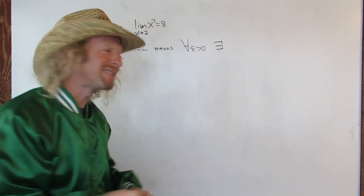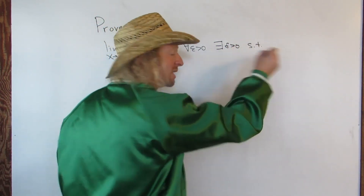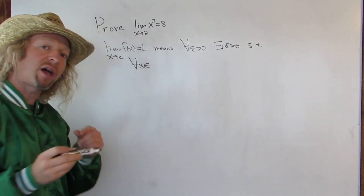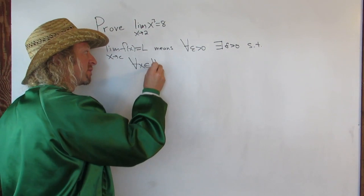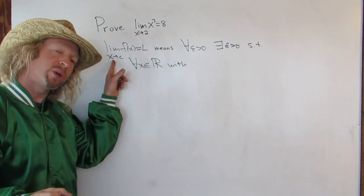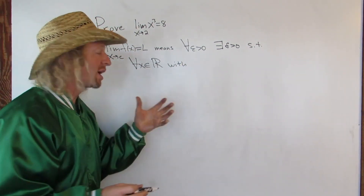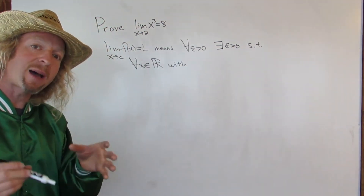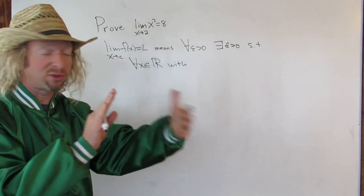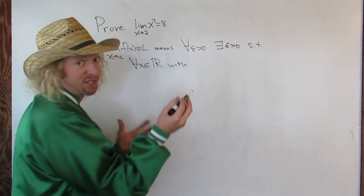This means there exists a delta greater than 0 such that — 'st' means 'such that' — for every real number x in the set of real numbers. And this means that when x gets really, really close to c, f of x gets really, really close to L. We can write that using absolute value because absolute value is the distance function we use in the real world — it's a measure of distance. When we're studying real numbers, we also use the absolute value function for distance, typically.